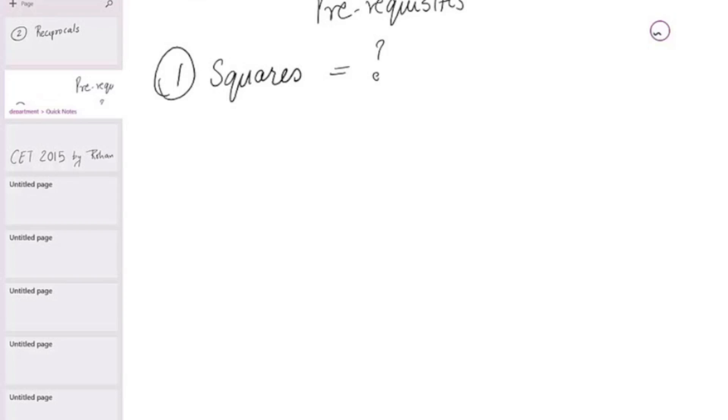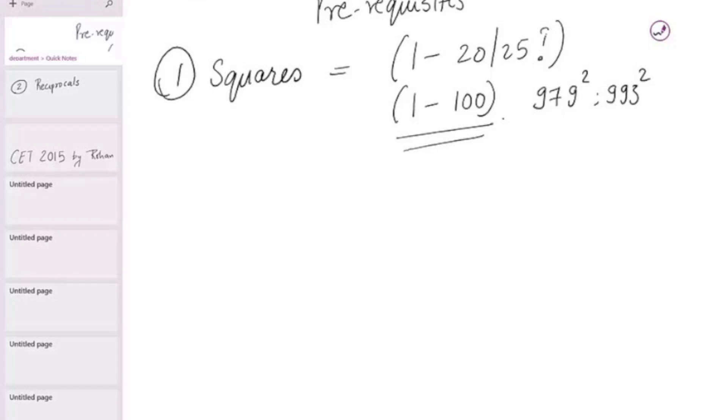The first thing you got to know is squares. Now, I always ask this question. How many do you know? One to, what is the upper limit? One to 20? One to 25? How many squares do you know? For cracking CET, you got to know squares from 1 to 100 if not knowing this.